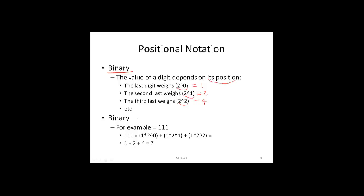For example, looking at binary 1111 — not decimal, but binary 1, 1, 1, 1. The least significant bit is position 0, followed by position 1 and position 2. Using positional notation to convert this to decimal: the first digit is 1 times its weight, the second is 1 times its weight, and the third digit is 1 times its weight. That equals 1 plus 2 plus 4, which equals 7. So binary 111 is equivalent to decimal 7.